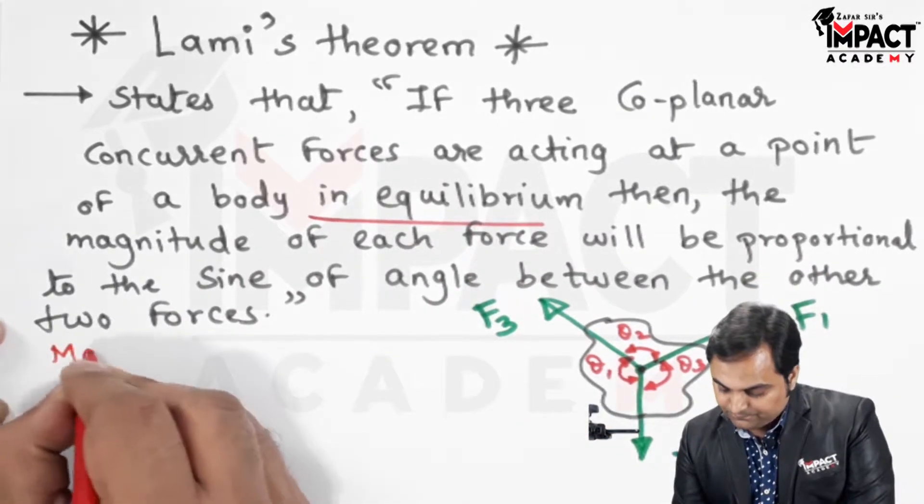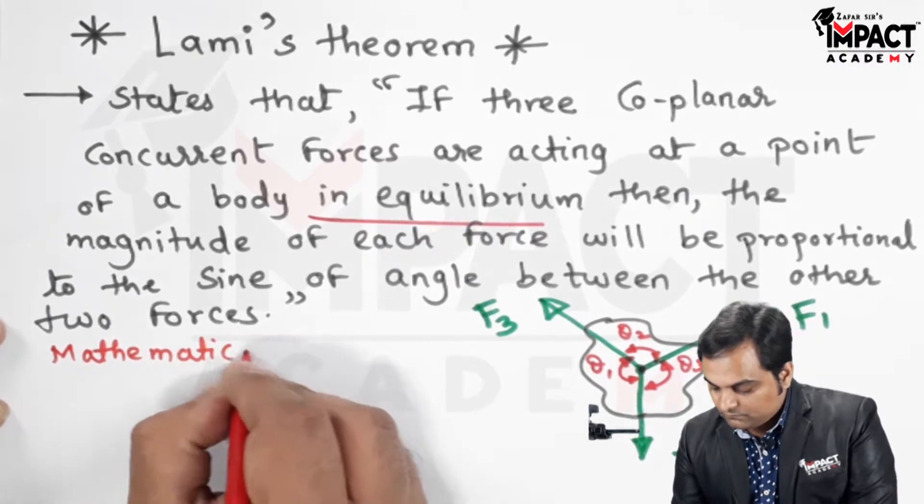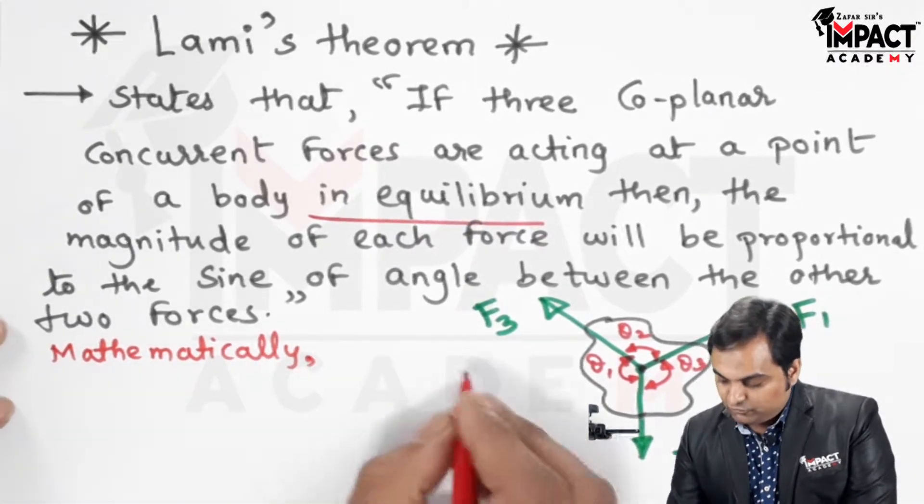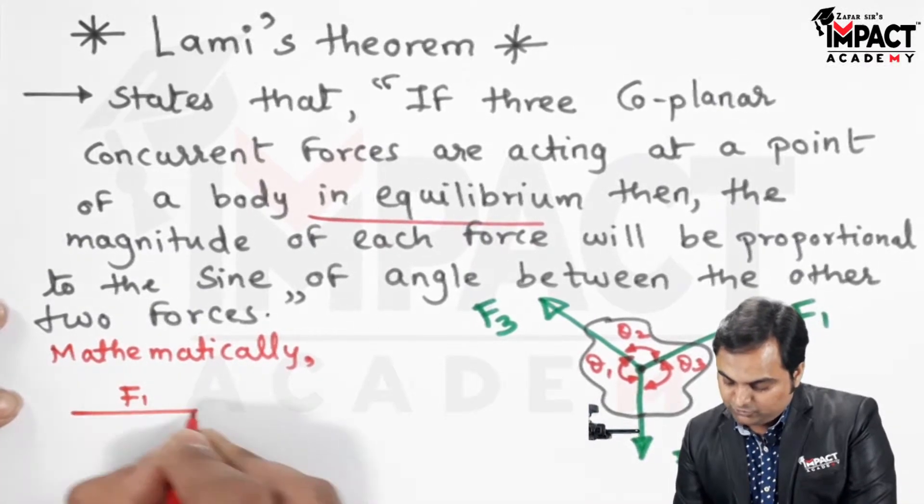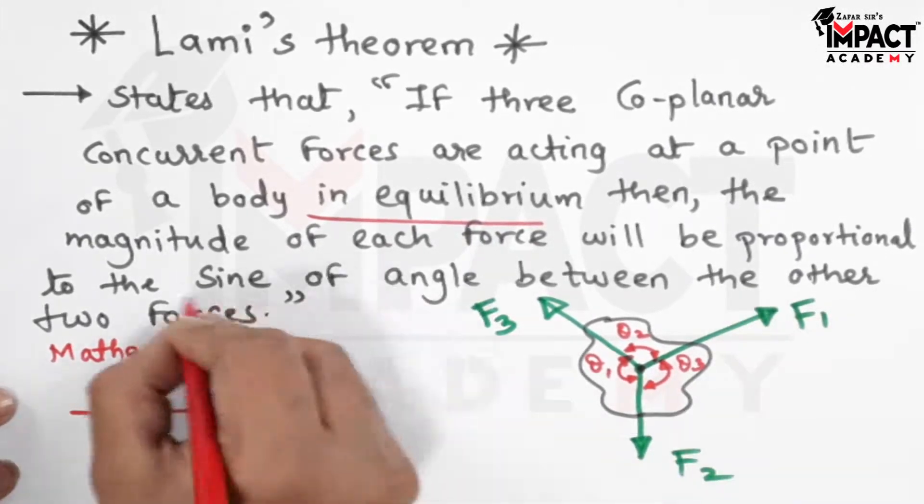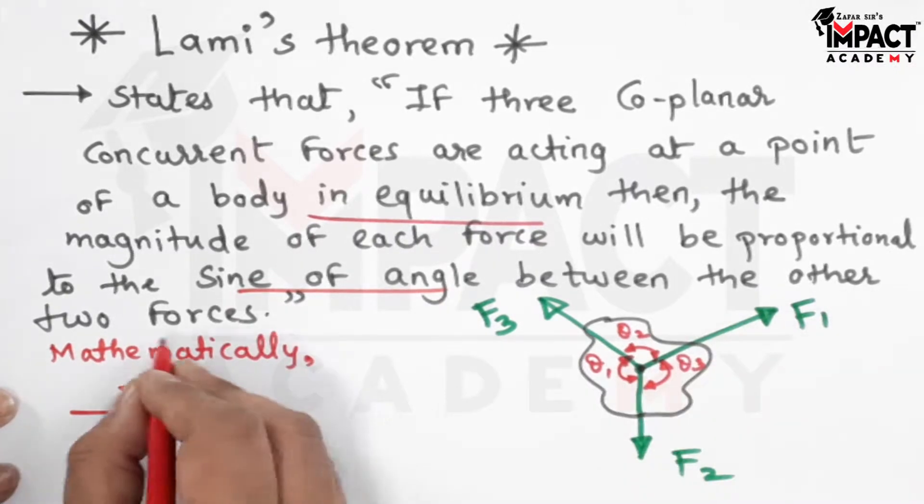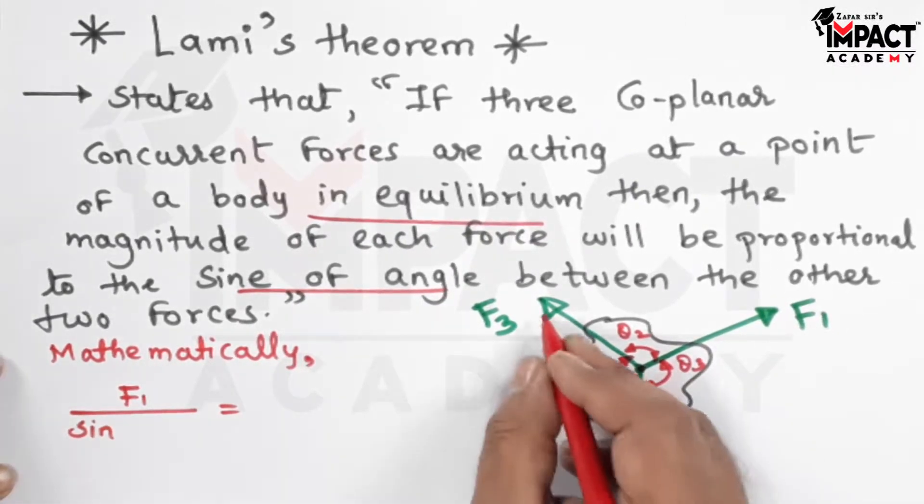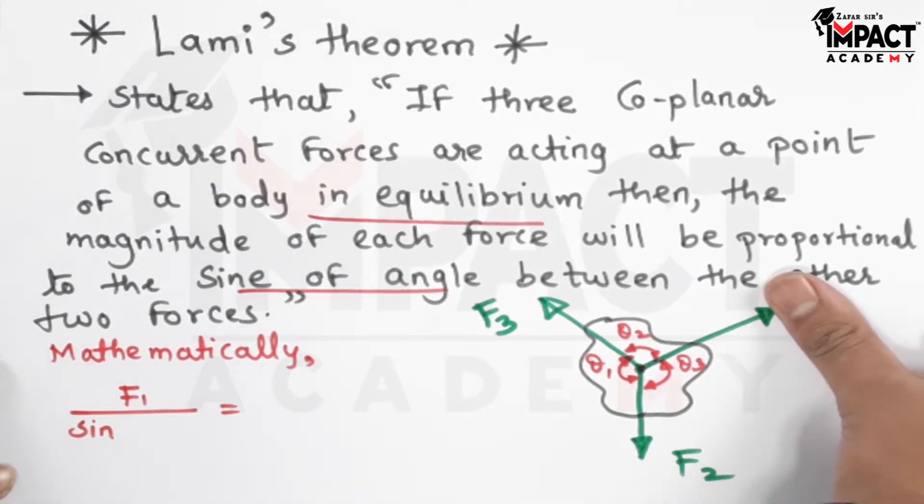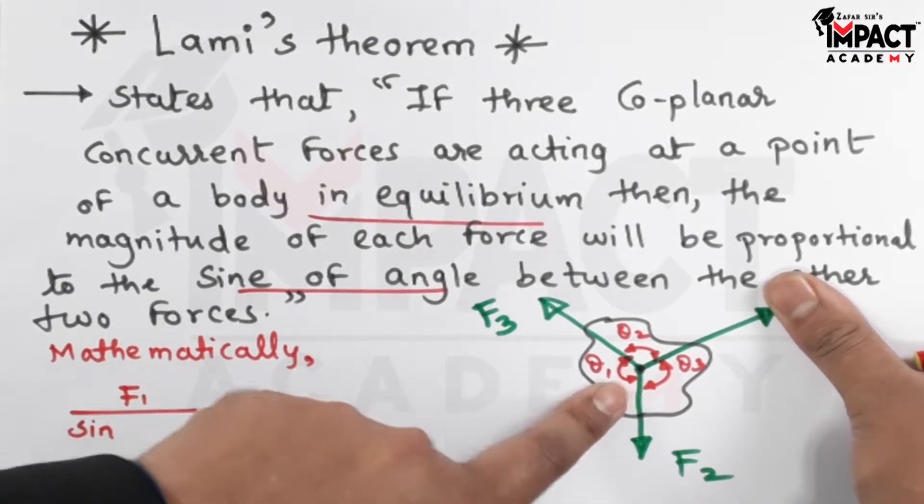Mathematically, each force, for example if I start with F1, is proportional to the sine of the angle between the other two forces. Sine of angle between the other two forces, like if I take F1, then the angle between F2 and F3, that is theta 1. I have to take this angle, theta 1.